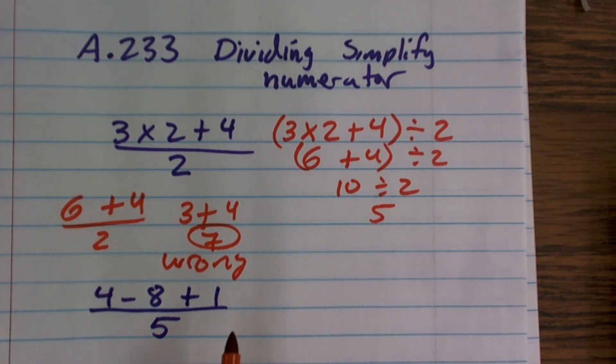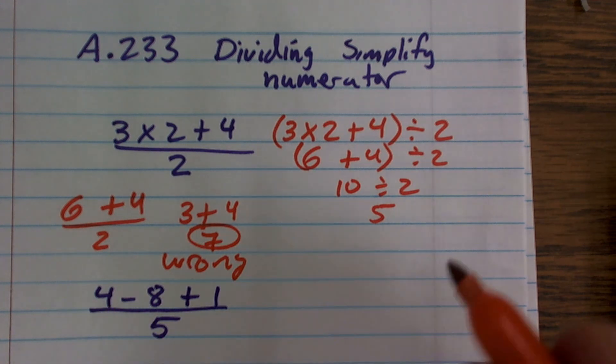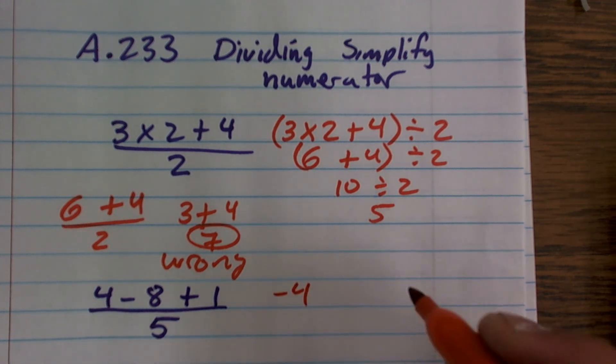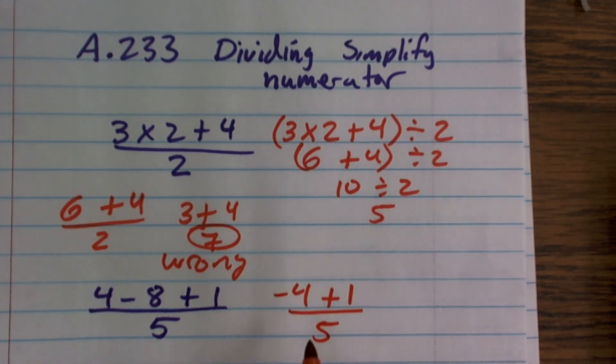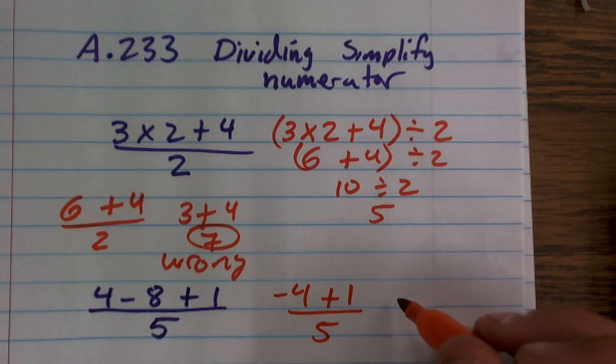So on this problem, what you're going to want to do is here, I need to simplify my numerator. So I'm just going to work from left to right. 4 minus 8 is negative 4, plus 1, divided by 5. Then I simply add negative 4 plus 1, which is negative 3 over 5.